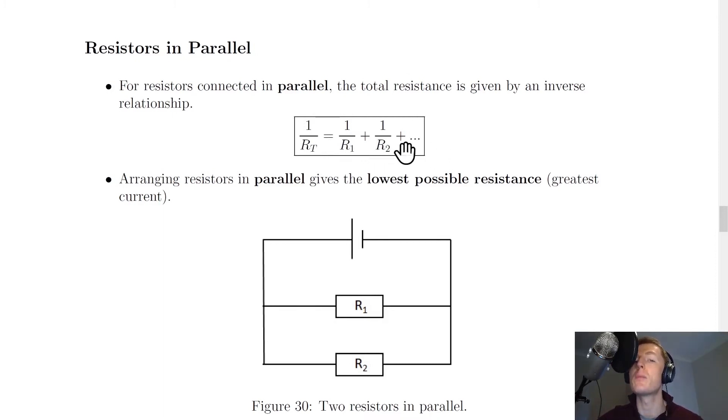is there to show you that you would go up to the value of however many resistances you had. So if you had three resistors in parallel, you would go up to 1/R3. If you had five, you would go up to 1/R5, and so on.